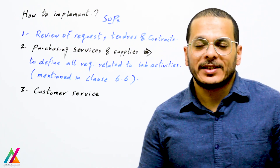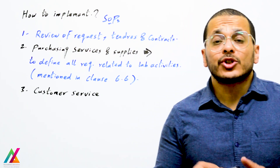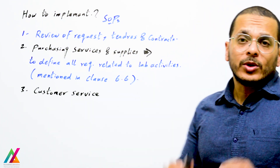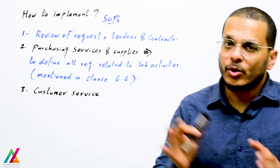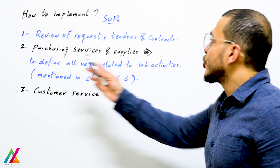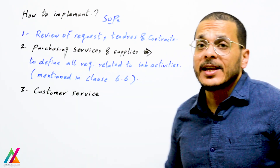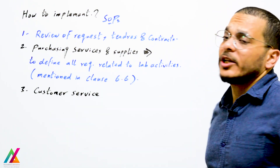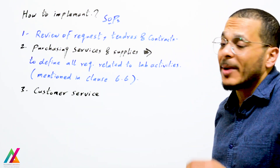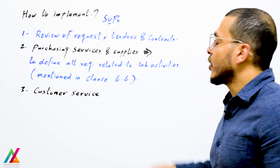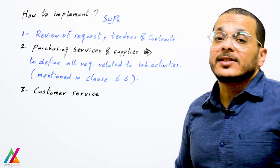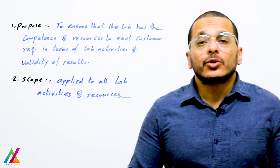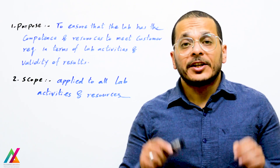At the end of this lecture, my suggestion on how to implement this clause: several procedures should be prepared. First, a procedure for review of requests, tenders, and contracts. Second, purchasing services and supplies — a very important SOP to define all requirements related to lab activities as mentioned in clause 6.6. Third, customer service, to define customer rights.